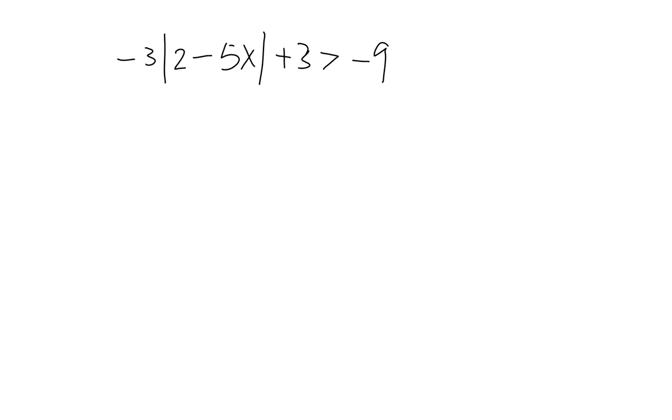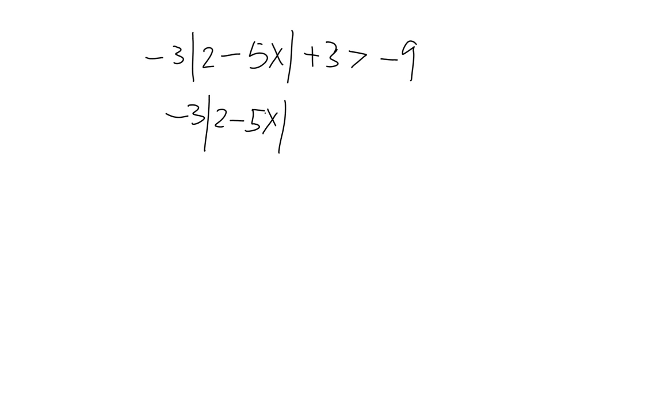And so now we move the plus 3 to the right. So we have negative 3 times the absolute value is greater than negative 3 minus 9, that's negative 12.